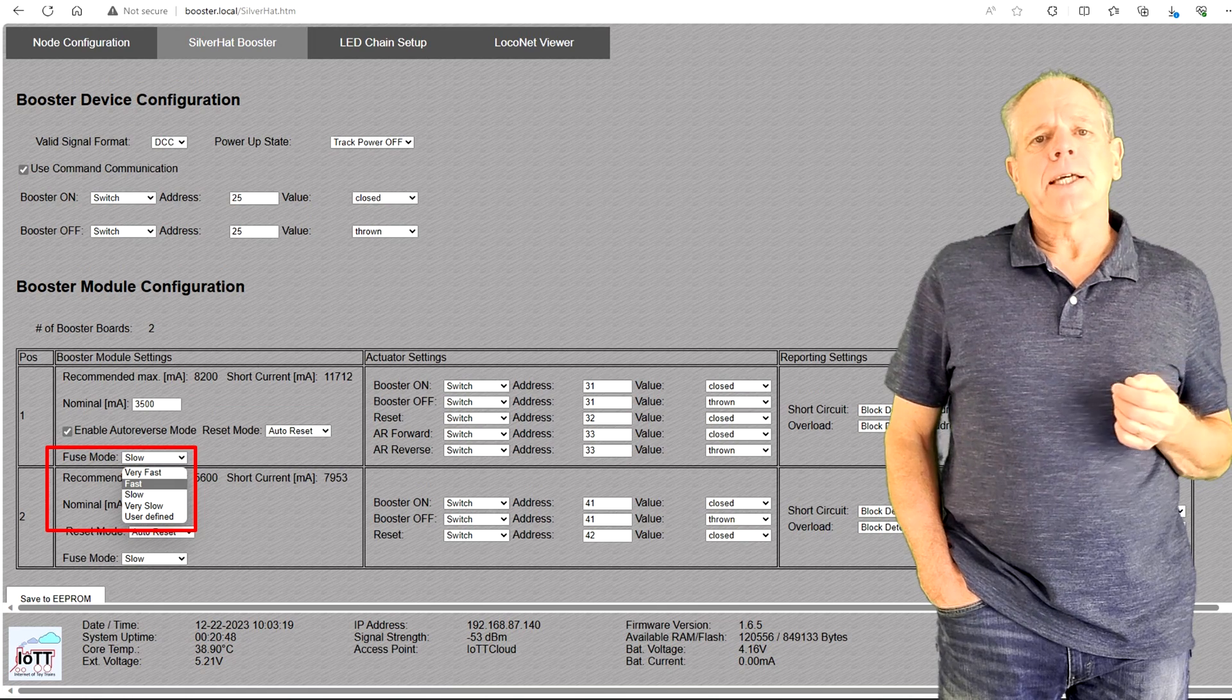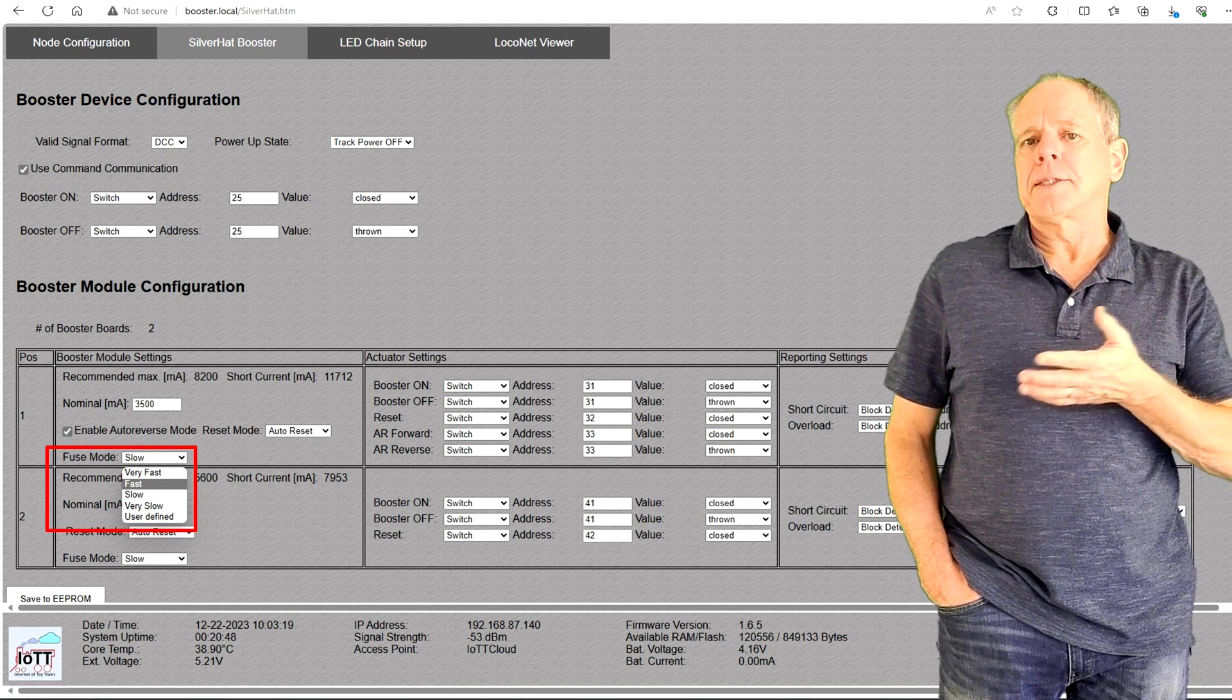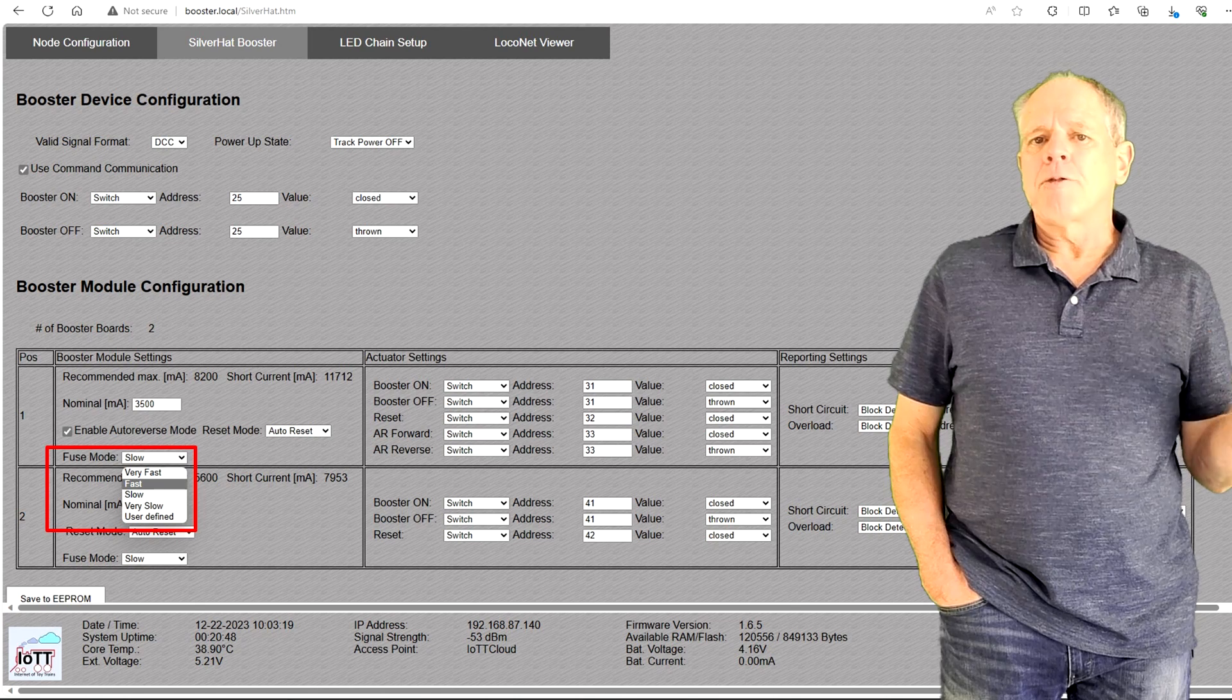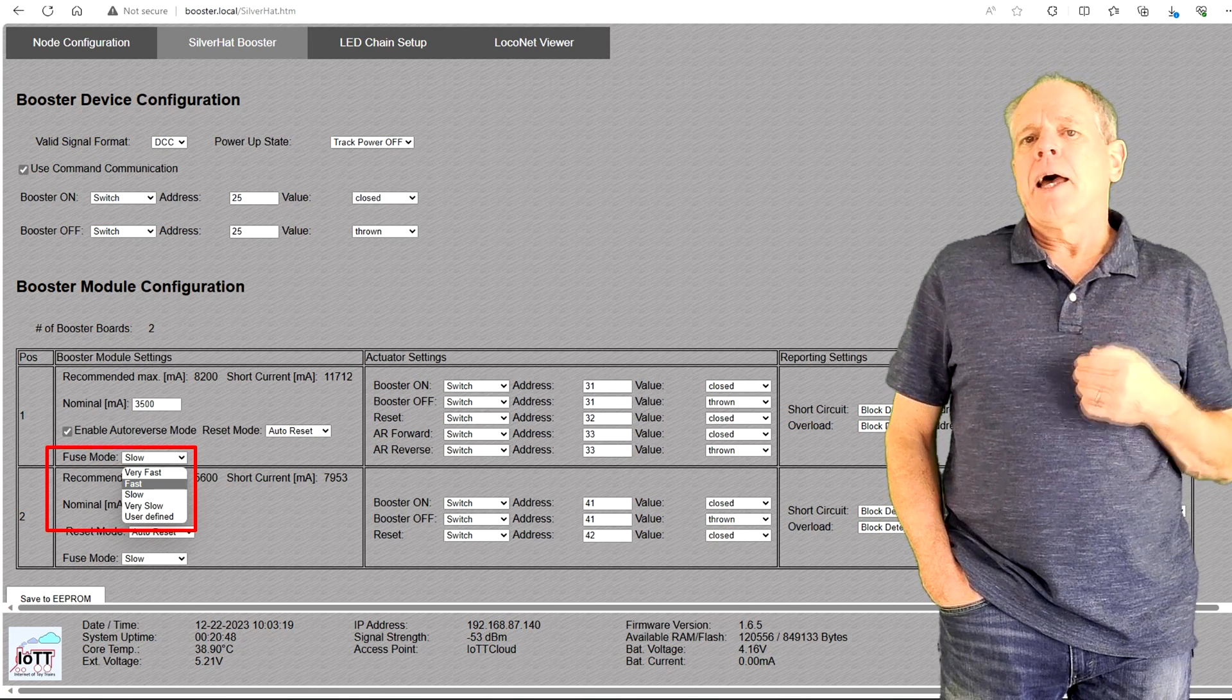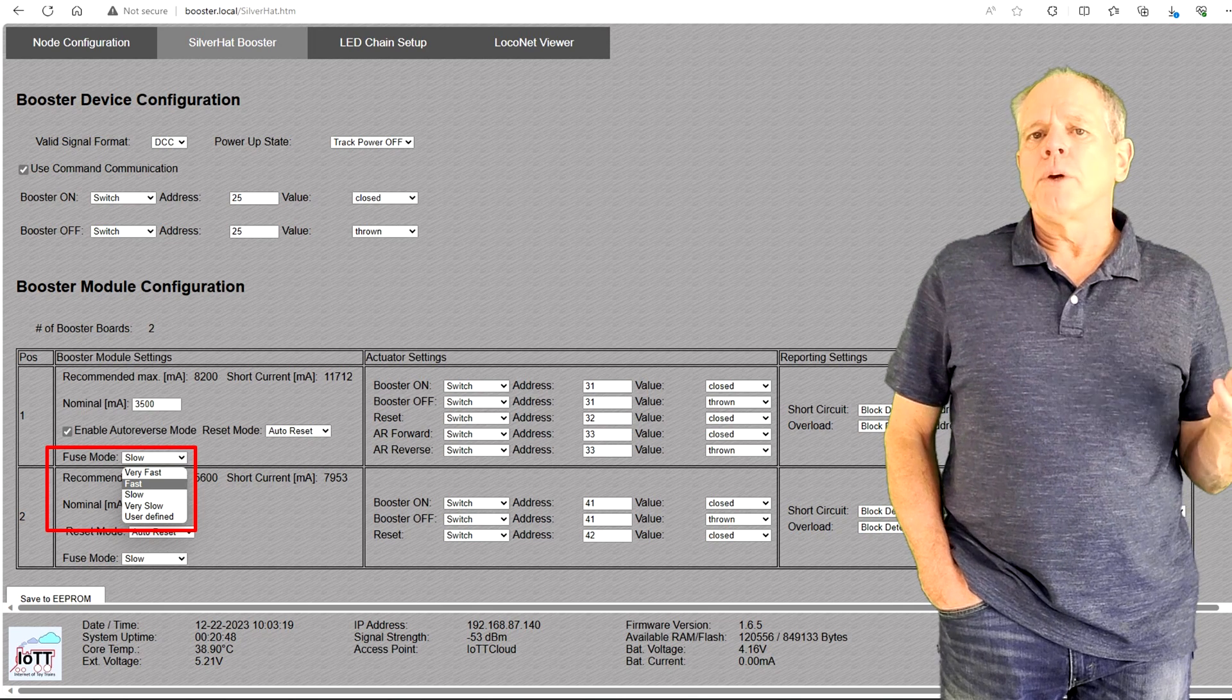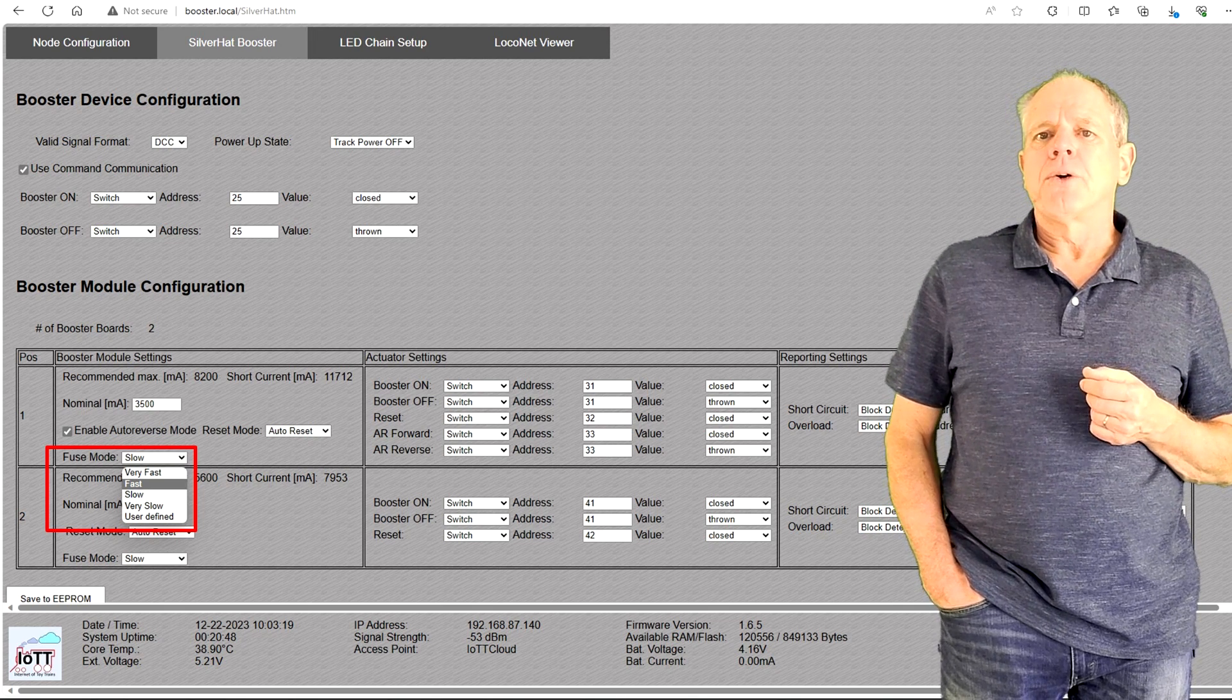Last in this section, set the fuse mode from slow to fast. It determines how fast the booster is to react in case of a short circuit and how much overloading is tolerated before an over-temperature shutdown occurs.